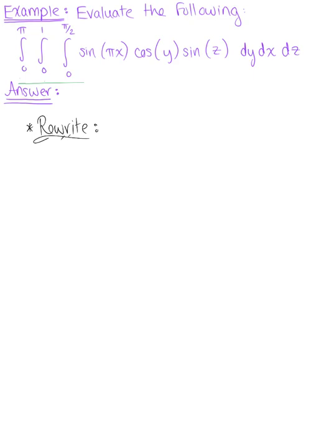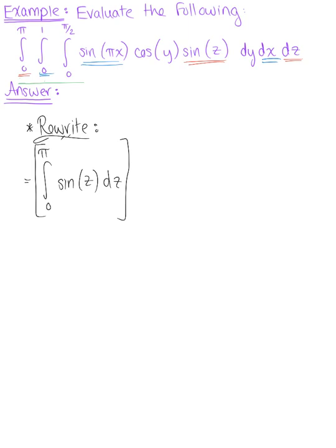Let's rewrite this to get started. Starting from the outer integral, which is z — looking within, we see the function related to z is sine of z. So we can rewrite this integral as the integral from zero to pi of sine of z dz, and this is going to be multiplied by the middle integral, which is x. The function related to that is sine of pi x, so this is multiplied by the integral from zero to one of sine of pi x dx.